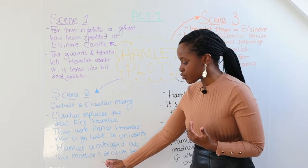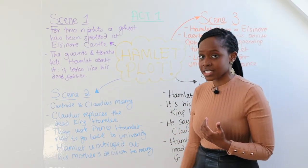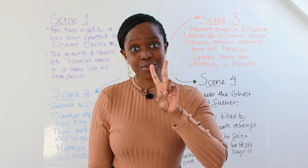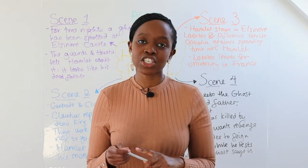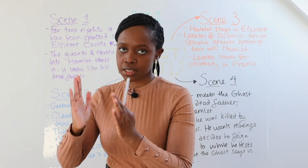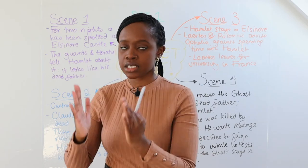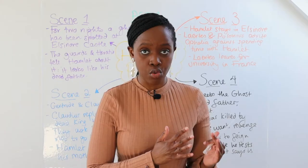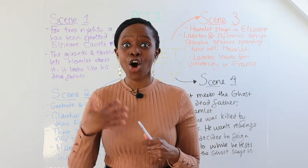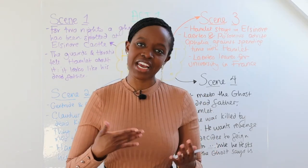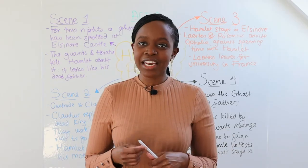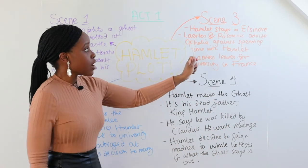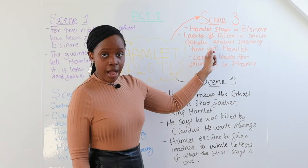We also learn that Hamlet is really disgusted with Gertrude's behavior — outraged at his mother's decision to remarry so quickly. Interestingly, his outrage is more directed towards his mother than his uncle. He's disgusted that Queen Gertrude has married his father's brother Claudius, rather than directing his anger equally at Claudius for marrying his mother.